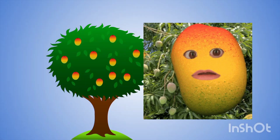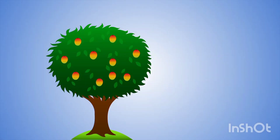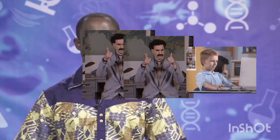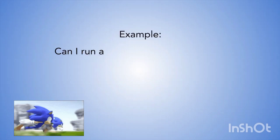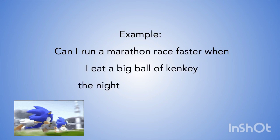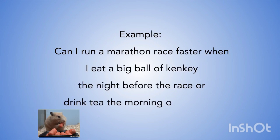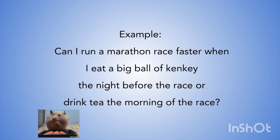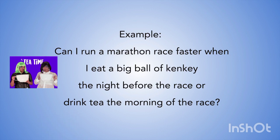For example: why do fruits, for example mango, fall straight down to the earth and not sideways? See to it that the question you pose is clear and precise, and that it makes sense pertaining to what you already know about the subject. For example: can I run a marathon race faster when I eat a big bowl of kenkey the night before the race, or drink tea the morning of the race?